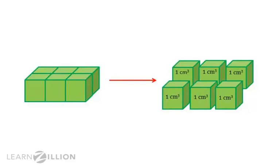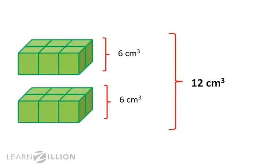I'm going to put my rectangular prism back together. I'm going to add six cubic centimeters to six cubic centimeters, which is the volume of each layer. And that gives me a total volume of 12 cubic centimeters.